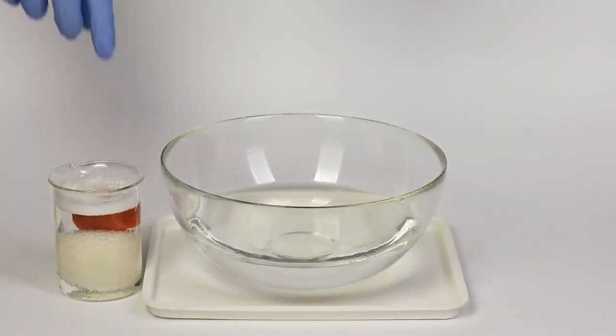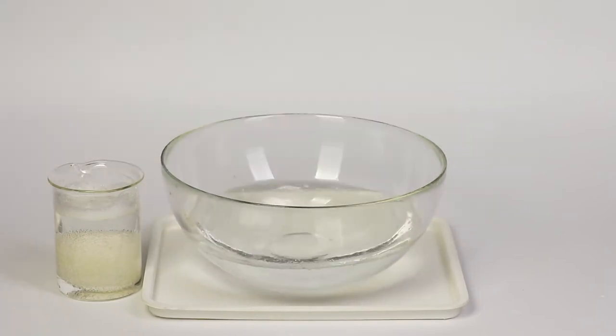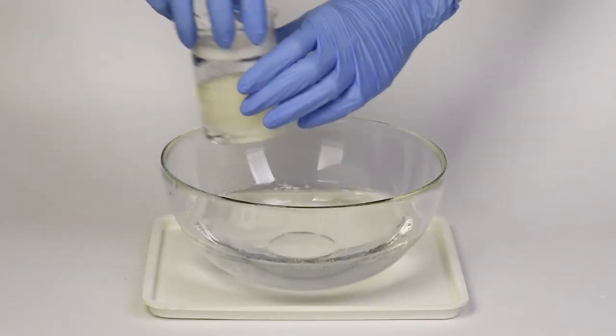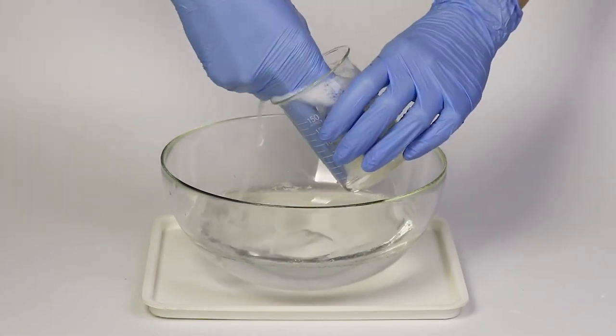Take the stopper out of the beaker and wash it with water. After this, carefully remove the egg from the beaker and gently rinse it with water. Pour the vinegar solution down the sink.